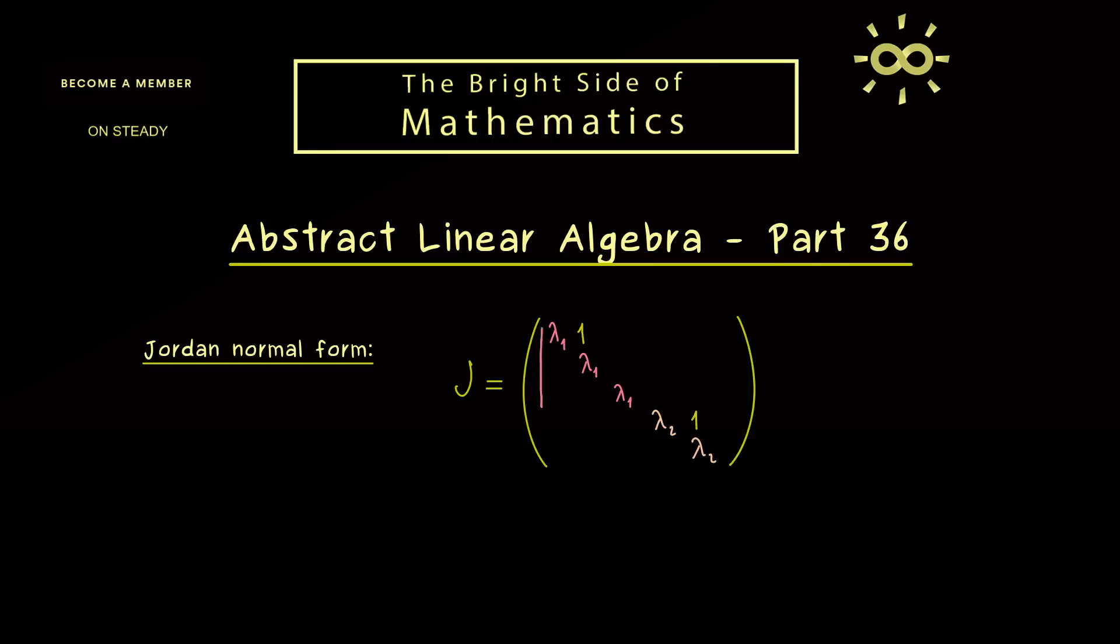Now the eigenvalues tell us about the Jordan blocks we have and the 1s tell us about the Jordan boxes in them. So for example here in the first Jordan block we have two Jordan boxes and only one in the second block. And in fact we will see soon that the whole proof about the Jordan Normal Form is just about the behavior of these Jordan boxes.